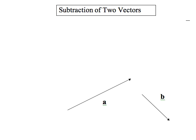One thing we can do is create negative B, which is create a different vector that's the same magnitude but opposite direction, and add it normally to vector A.